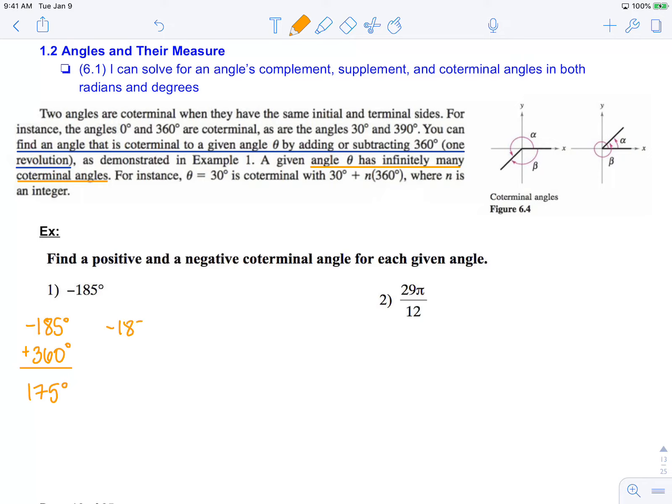Now, if I start at that negative angle and I want a negative coterminal angle, I'm going to then subtract 360 degrees, which is going to rotate me around the negative direction of full revolution. And that will take me to negative 545 degrees. So we can add 360 degrees until we get a positive coterminal angle, or subtract 360 degrees until we get a negative coterminal angle.